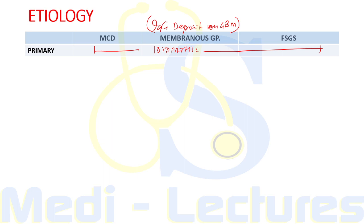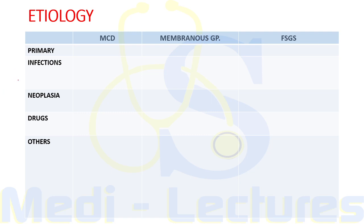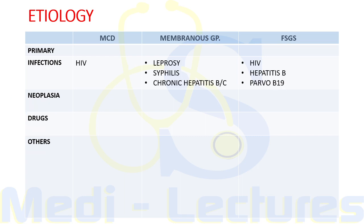Coming on to secondary causes — where the cause is a known one — these include infections, neoplasia, drugs, and other disorders. These are diseases that themselves lead to nephrotic syndrome. Regarding infections: minimal change disease can be seen with HIV infection.